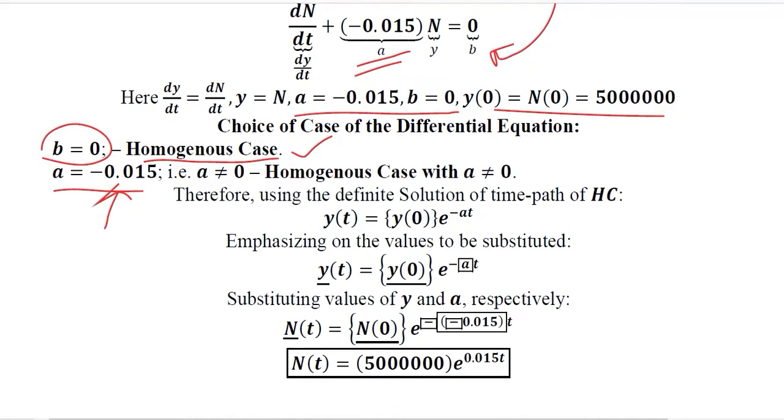The thing is easy for us because we have a homogeneous case in which the equilibrium value will be 0. If we look at the formula of the definite solution, we are emphasizing on the value of a and the initial condition, so we have underlined them.